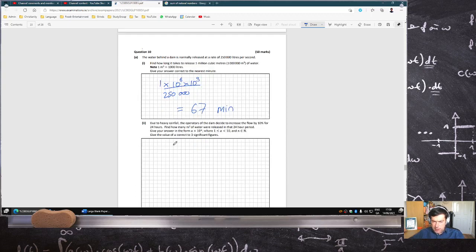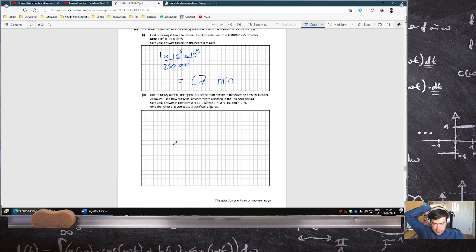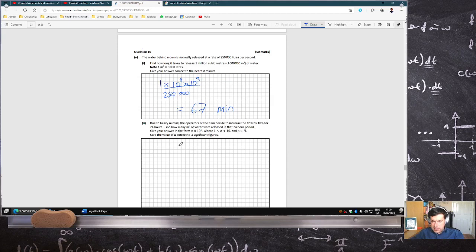Due to heavy rainfall, the flow increased by 10% for 24 hours. Find how many meters cubed of water were released in that 24 hour period. So it's 250,000 times 1.1 times 24 hours times 3600 seconds. So I got 2.38.